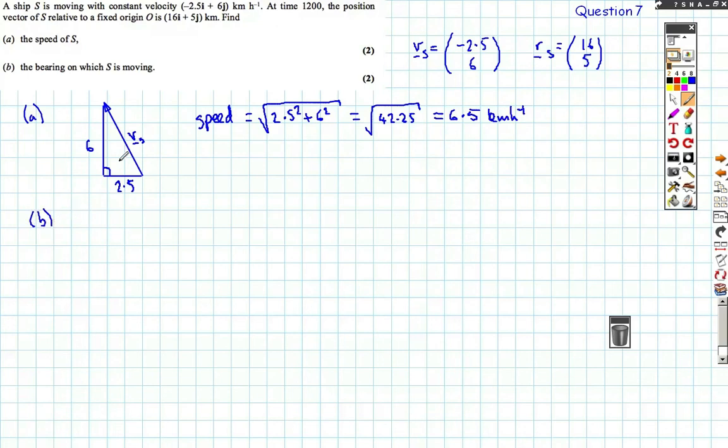Okay, now to find the bearing. Well, let's consider first of all, we need an angle in here. So let's consider this angle theta. Now, because it's a right angle triangle, we can set up a tan theta looking at 6 over 2.5, or theta equals tan⁻¹ of 6 over 2.5. Now I can do that in my calculator. So theta comes out as 67.38013505 degrees.